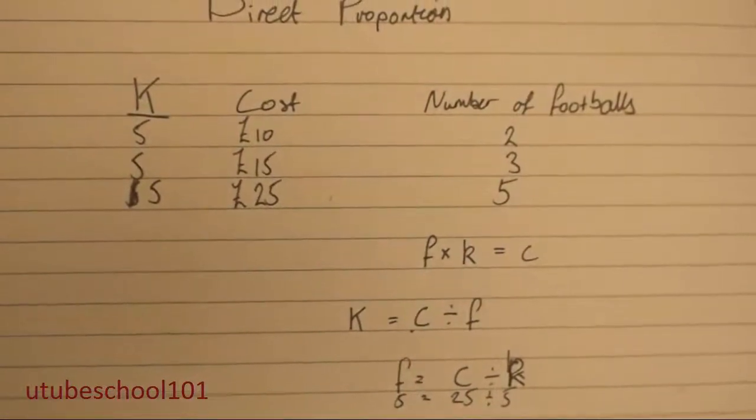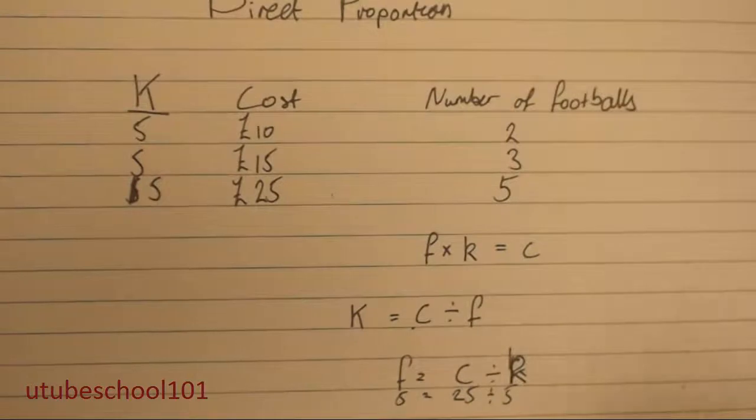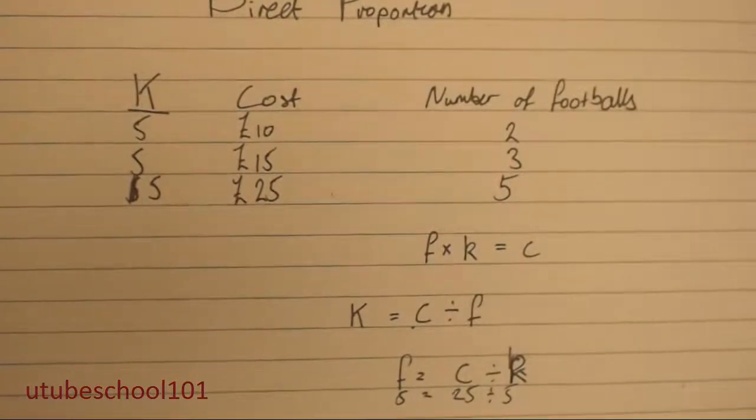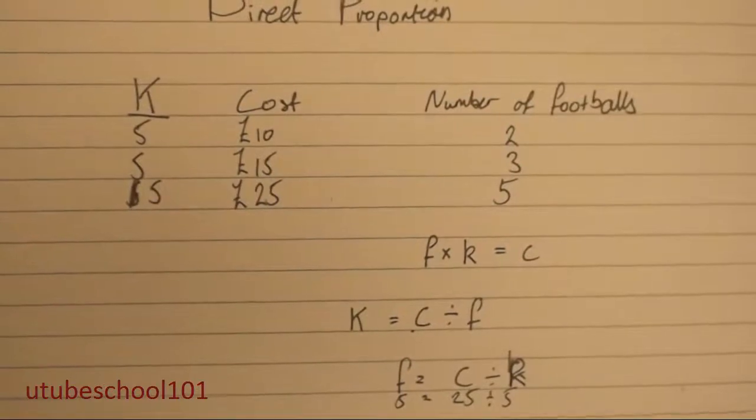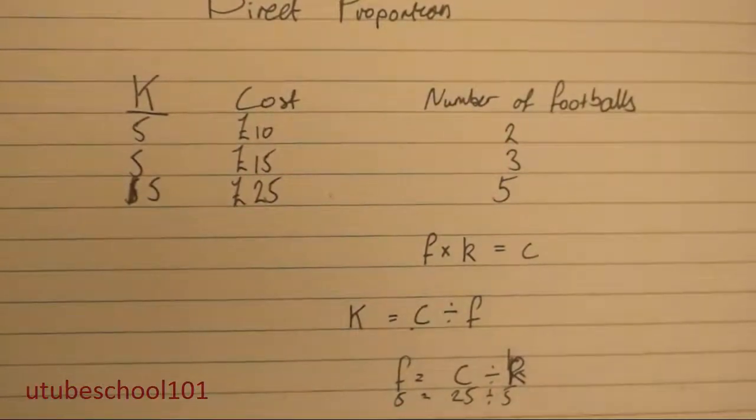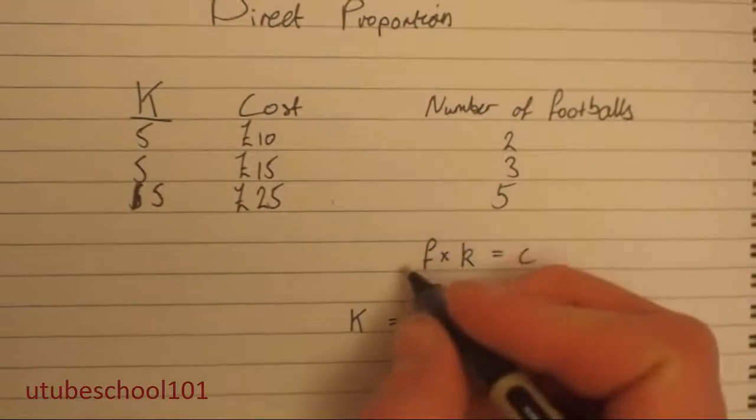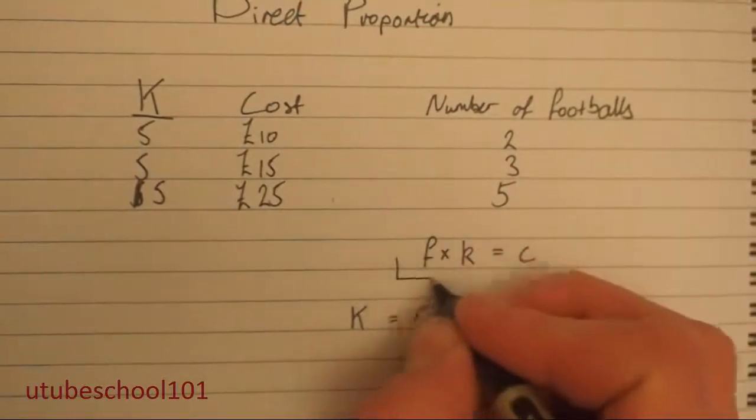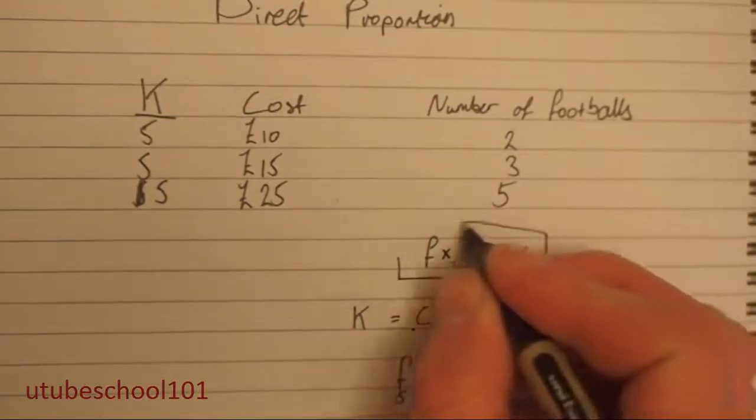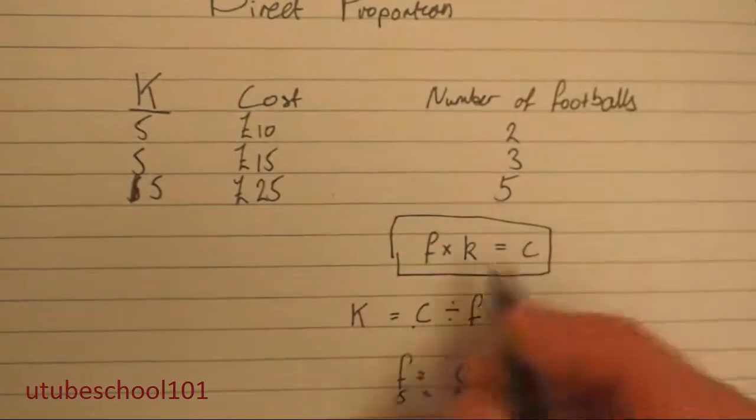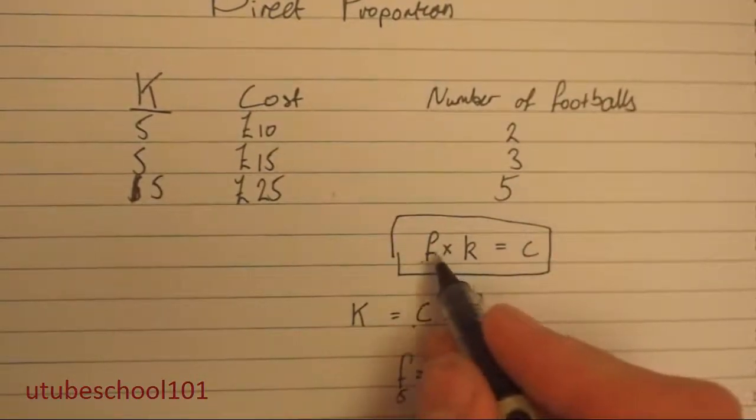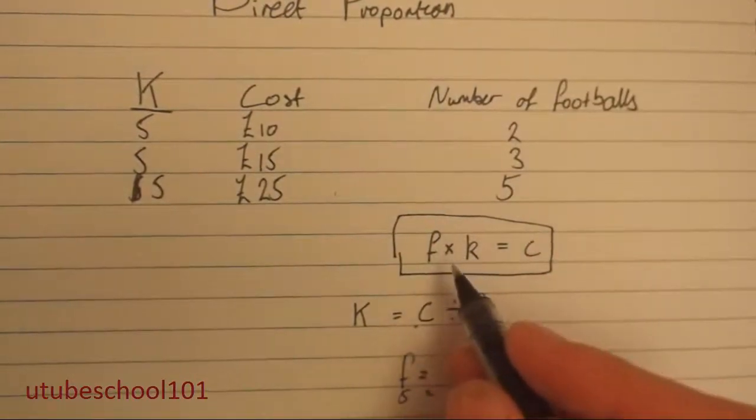I mean, you can see this makes perfect sense. And if you were going to purchase five footballs for five pounds each, or five dollars each, it's going to cost you twenty-five pounds. So, I would advise you to just remember this equation.